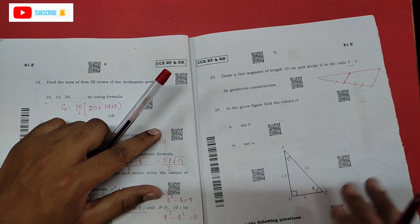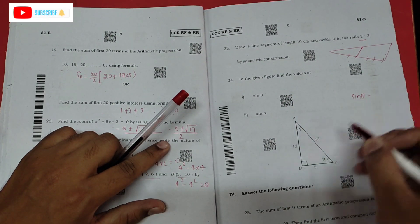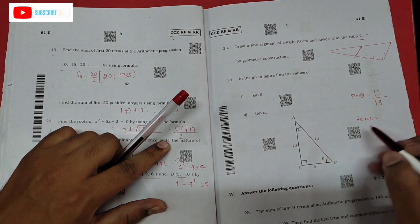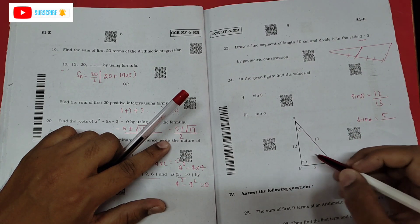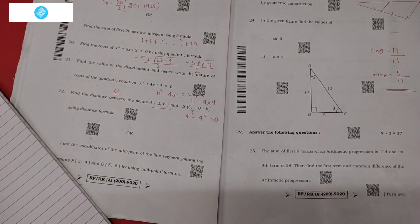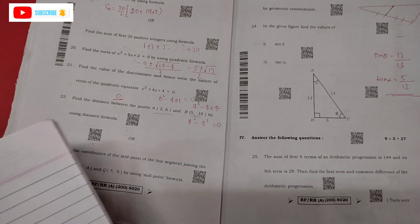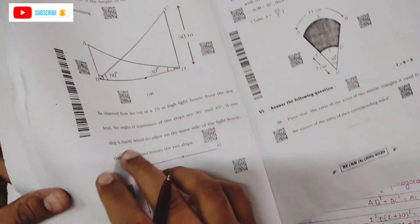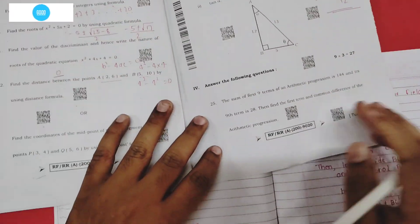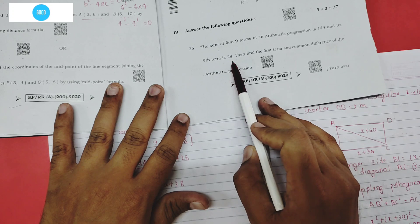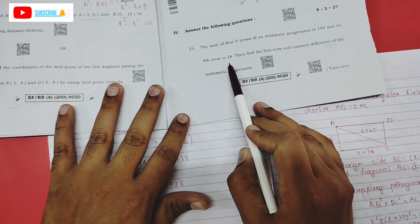Next — construction: draw a 10 cm line, make 5 arcs, mark points 1, 2, 3, 4, 5, join the last point and second point. That is the construction. Next — sin θ = opposite / hypotenuse. tan α = opposite / adjacent = 5/12.